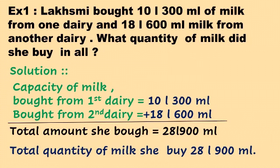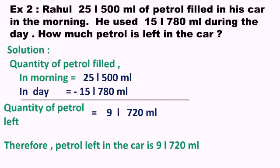For the solution, write the capacity of milk bought from the first dairy and the capacity bought from the second dairy. Then find the total capacity by adding both amounts. Make two columns — one for liters and one for milliliters — then add. The answer is 28 liters 900 milliliters.